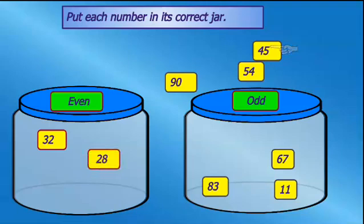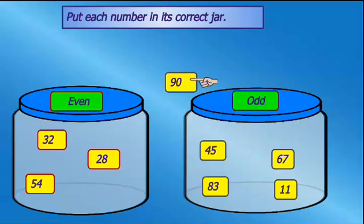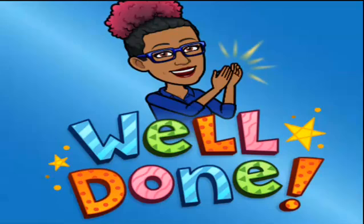So 28 went into the even jar. 45 in the odd jar. 54 in the even jar. And 19 goes into the even jar. Well done everyone.